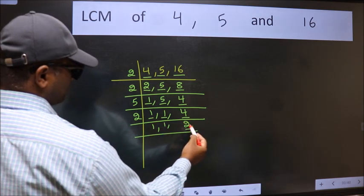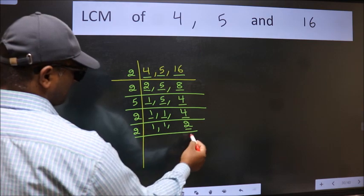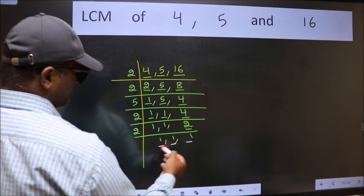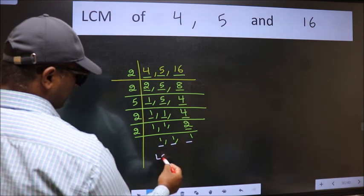Now here we have 2. 2 is a prime number so 2 times 1 is 2. So we got 1 in all three places so our LCM is,